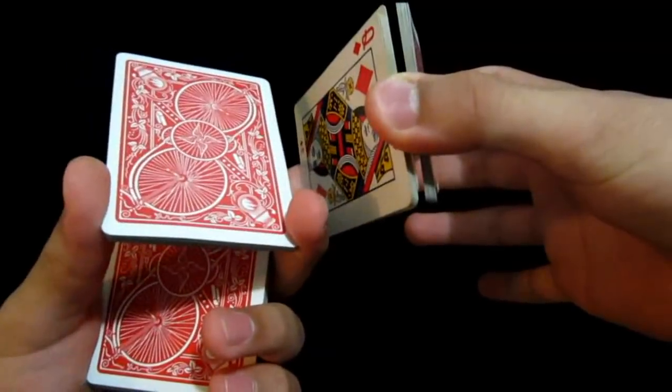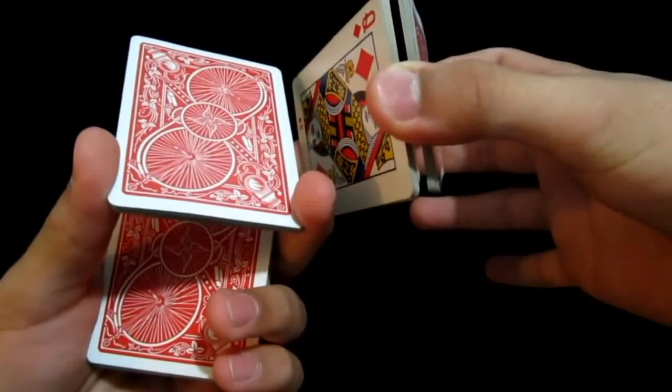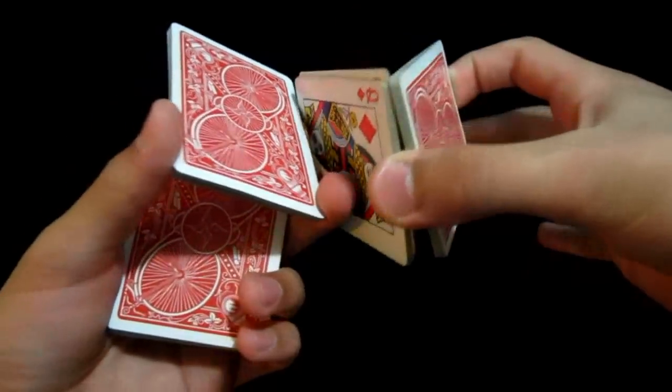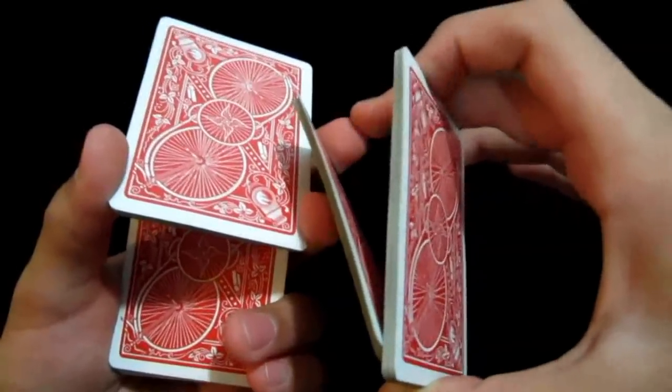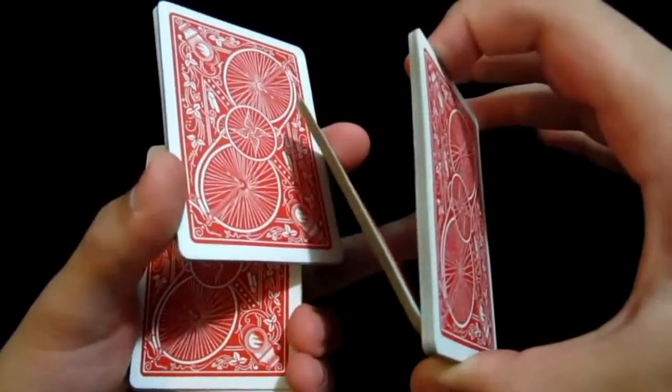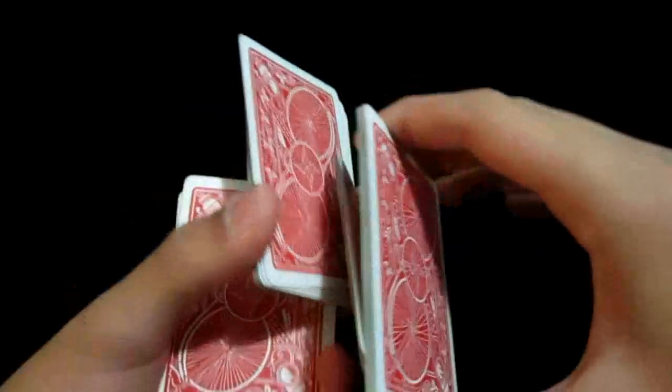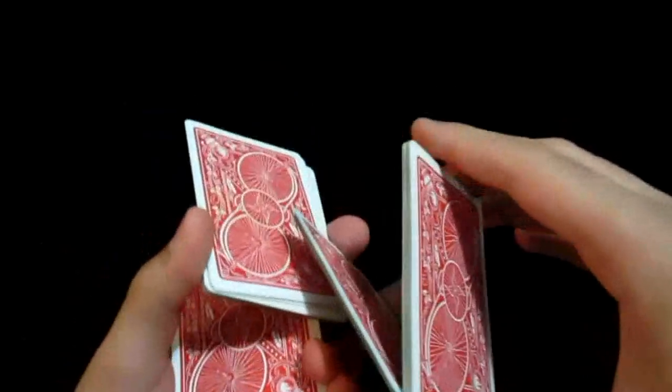Just push your right hand forward so it escapes from between the two packets. As you can see, it's now between your middle and thumb. You're just going to come over just like that and hold it between your index and thumb right now. So you let go with your middle.